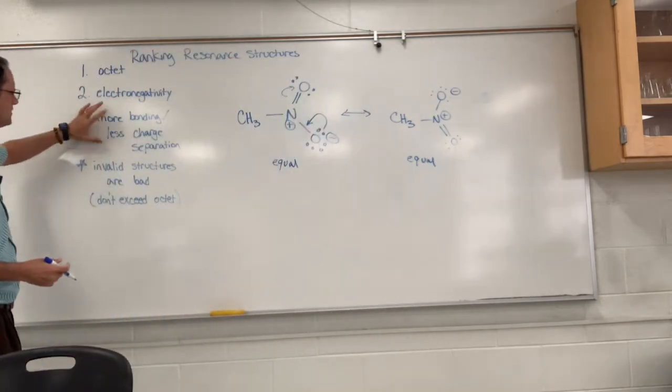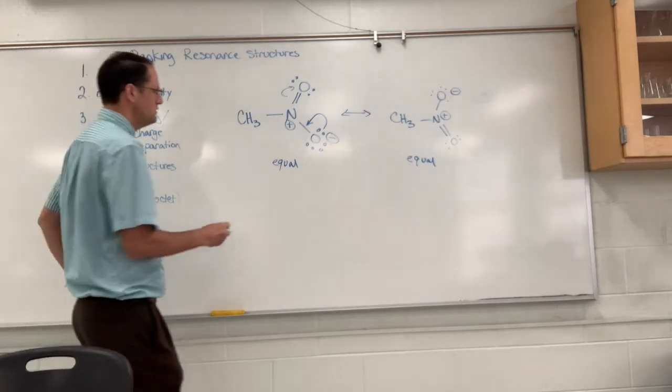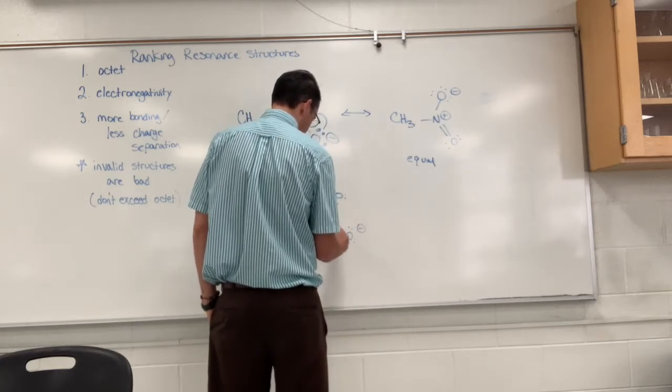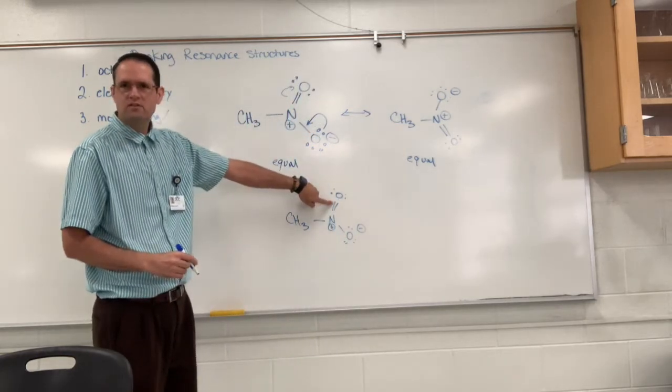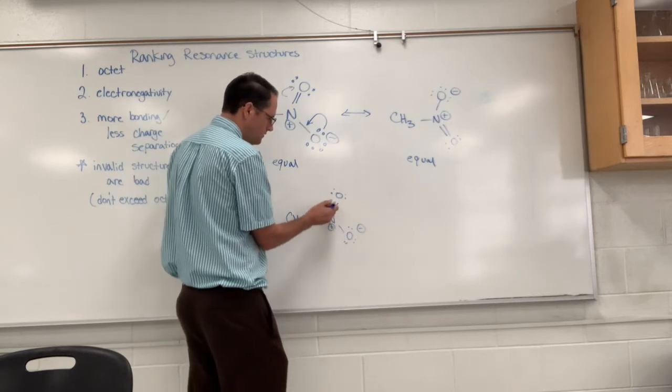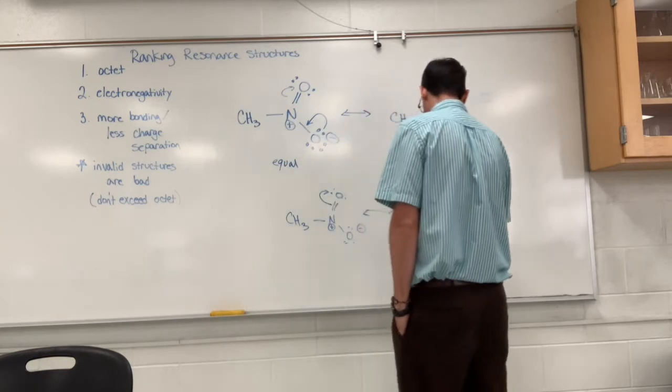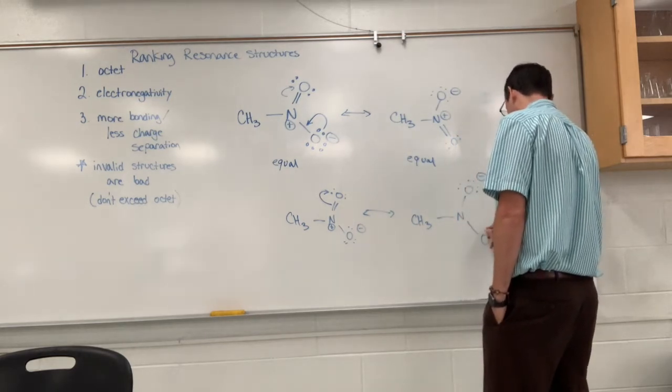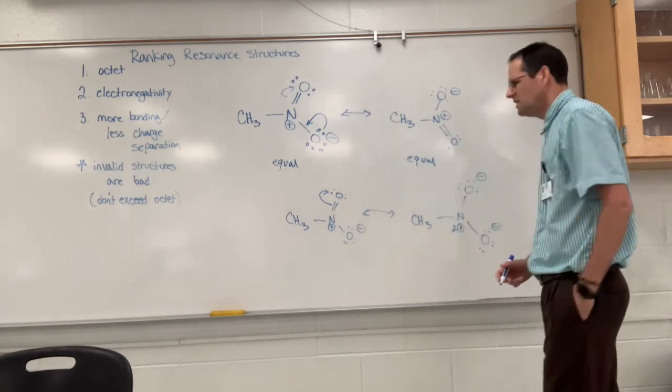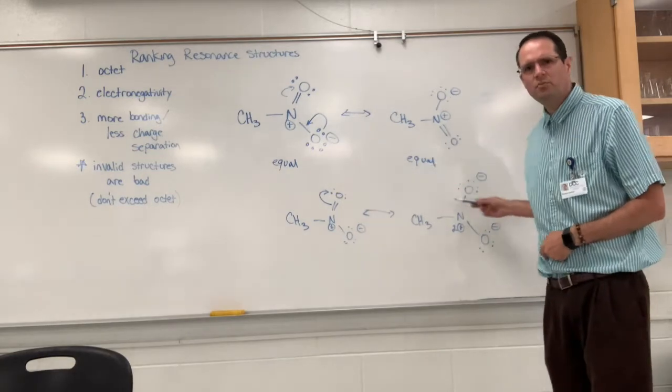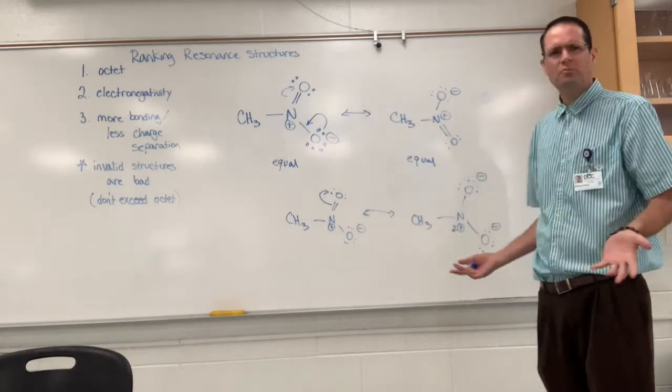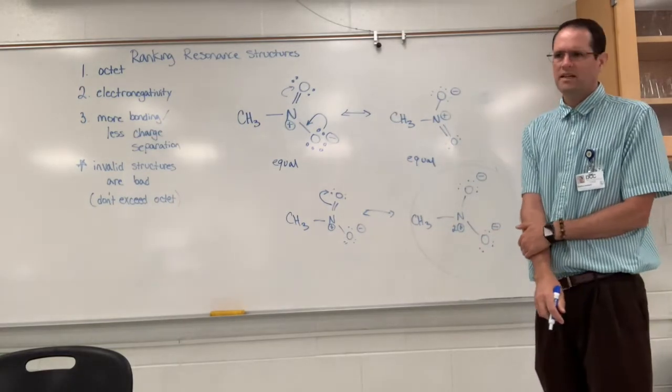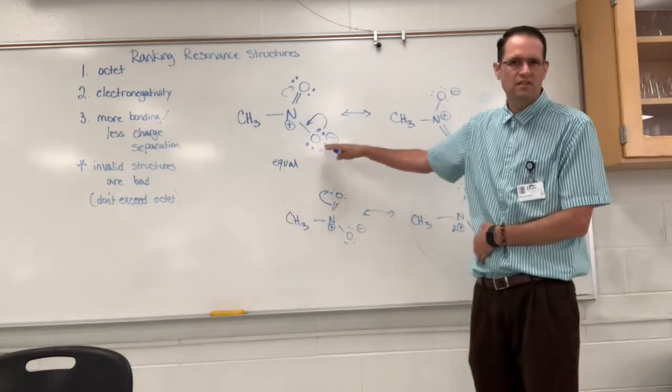Now what's an invalid structure would be something with more charge separation and less bonding. If you started with the nitromethane and if you try to move these electrons towards the oxygen, you're breaking a pi bond. You don't have a pi bond over here and you're creating more charges that are further separated from one another. So this is what you would call an invalid structure. This is definitely invalid. I would not ever draw that as a valid resonance structure when you can draw these other ones that are extremely good.